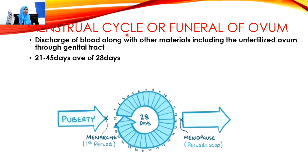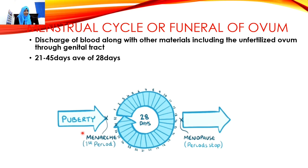The menstrual cycle is otherwise called the 'funeral of ovum.' It means the discharge of blood along with other materials including unfertilized ovum through the genital tract. It happens in a 21 to 45 day cycle, with an average of 28 days. The first menses occurring at puberty is called menarche.